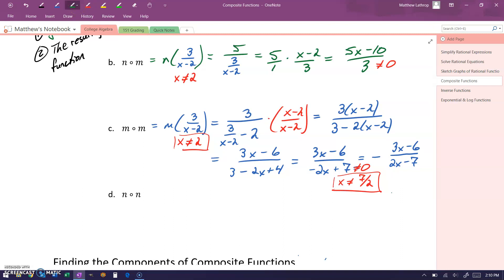In part D, we want to take the function n composed with itself. So this would be n of 5 over x, which would be 5 over 5 over x. Multiplying by the reciprocal would give us 5 over 1 times x over 5, or just x.